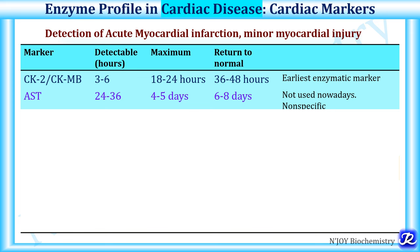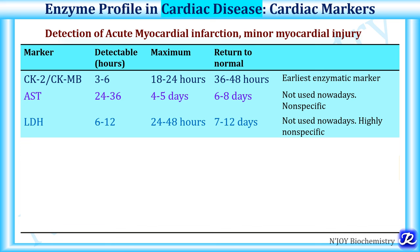LDH, that is lactate dehydrogenase, has various isoenzymes. It is detectable within 6-12 hours of myocardial injury, reaches its peak at 24-48 hours, and returns to normal by 7-12 days. It is also highly non-specific, increased in various other conditions, and that's why it is not used nowadays as a cardiac marker.